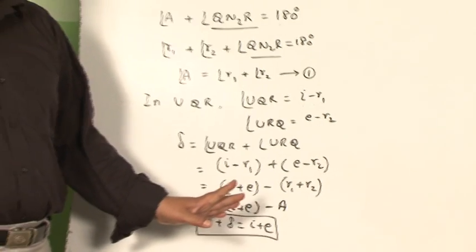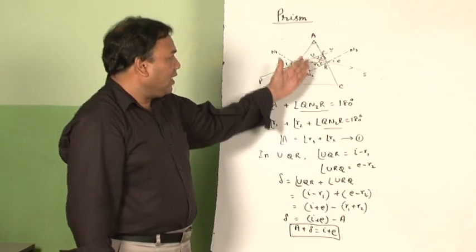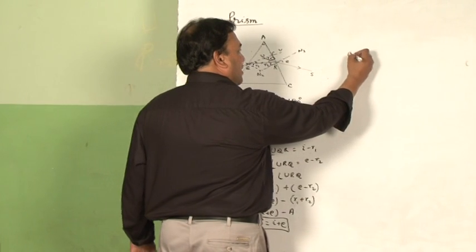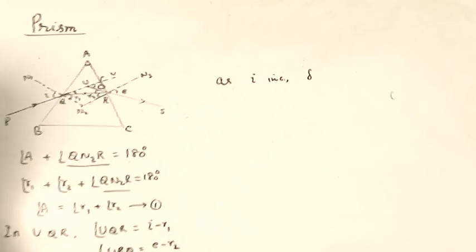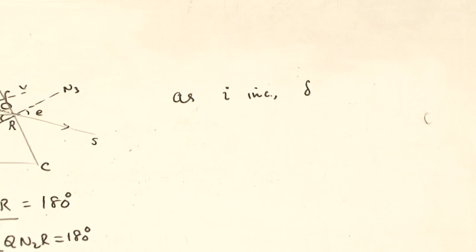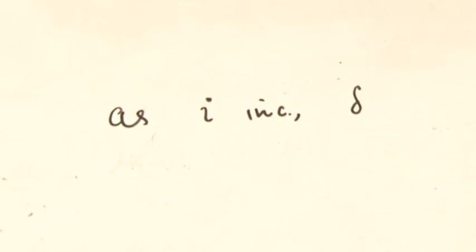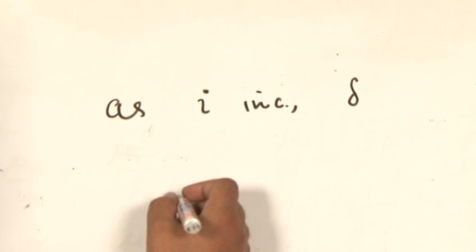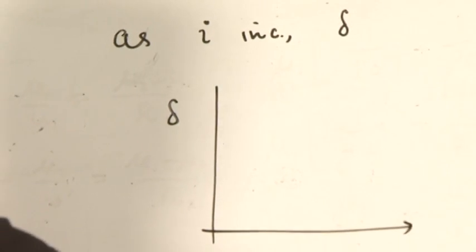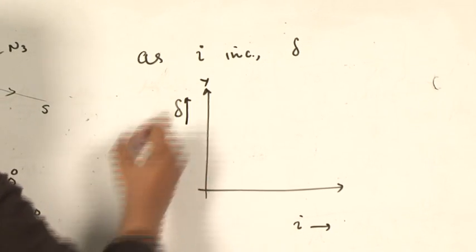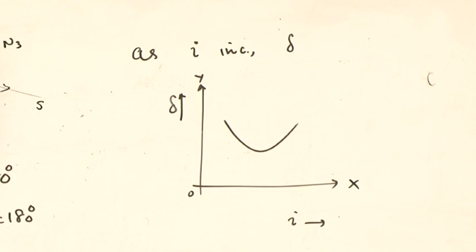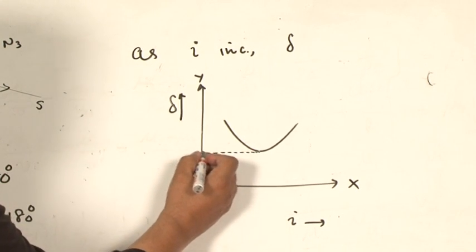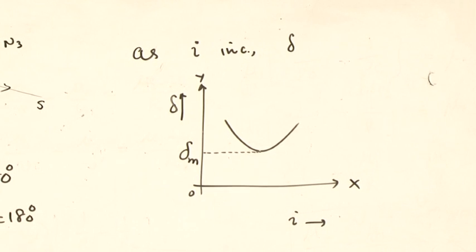This formula is called the prism formula. Experimentally, it was found that as the angle of incidence increases, the angle of deviation δ initially decreases, reaches a minimum value, and then starts increasing again. If I plot the graph between angle of incidence i and angle of deviation δ, I get a parabolic-shaped curve in which the minimum angle of deviation is called the angle of minimum deviation δM.